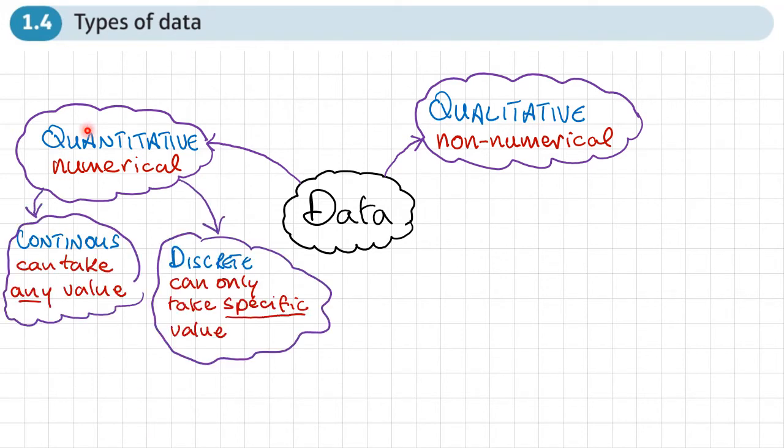Now, quantitative data can be split into two types. Continuous data, so this is numerical data that can take any value. So for example, let's say data about the height of something or the weight of something.